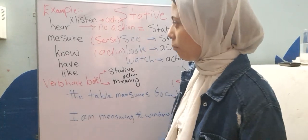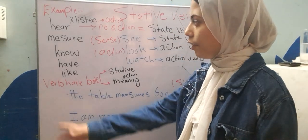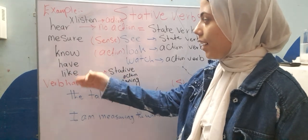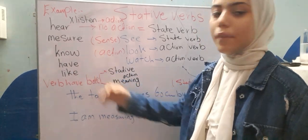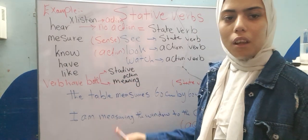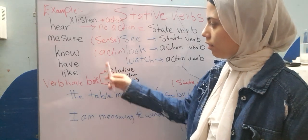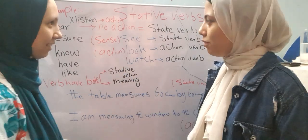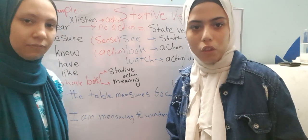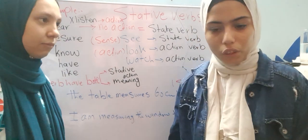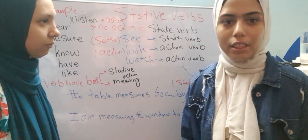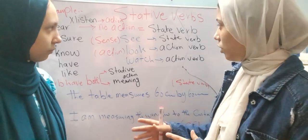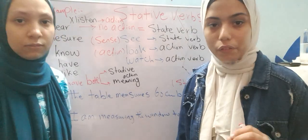Examples of static verbs include: hear, measure, know, have, and like. With 'hear', you don't choose to hear a voice or not — you just hear it. You haven't done any action. So this is a stative verb.